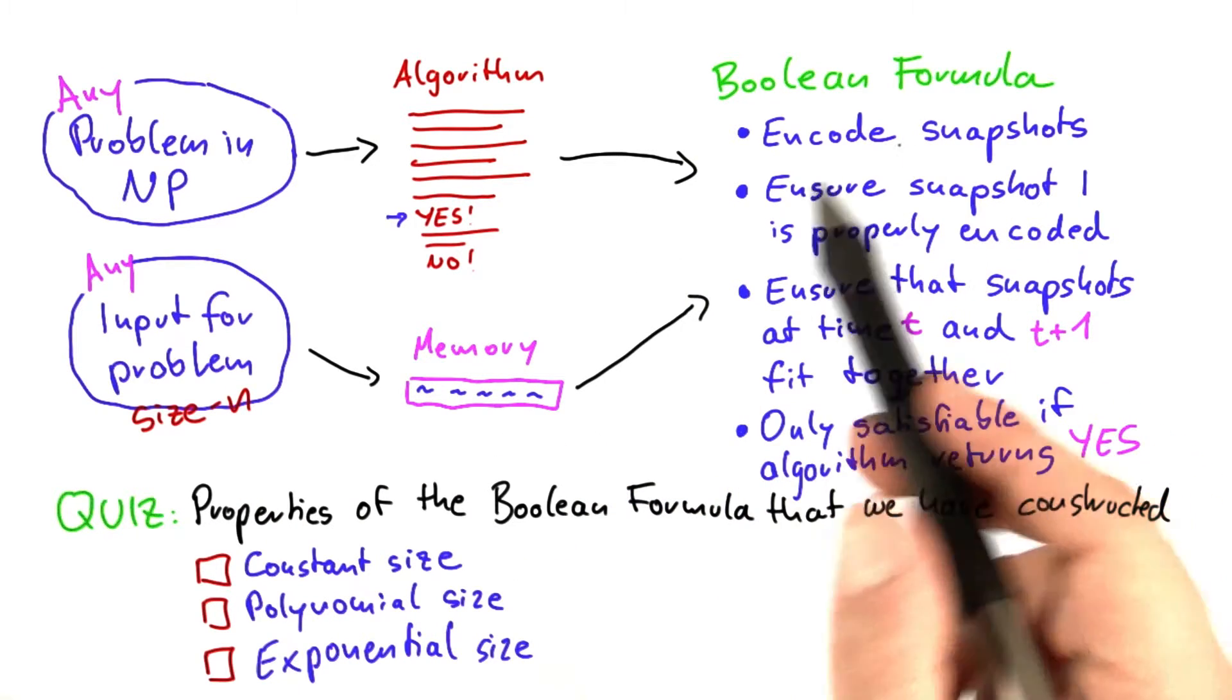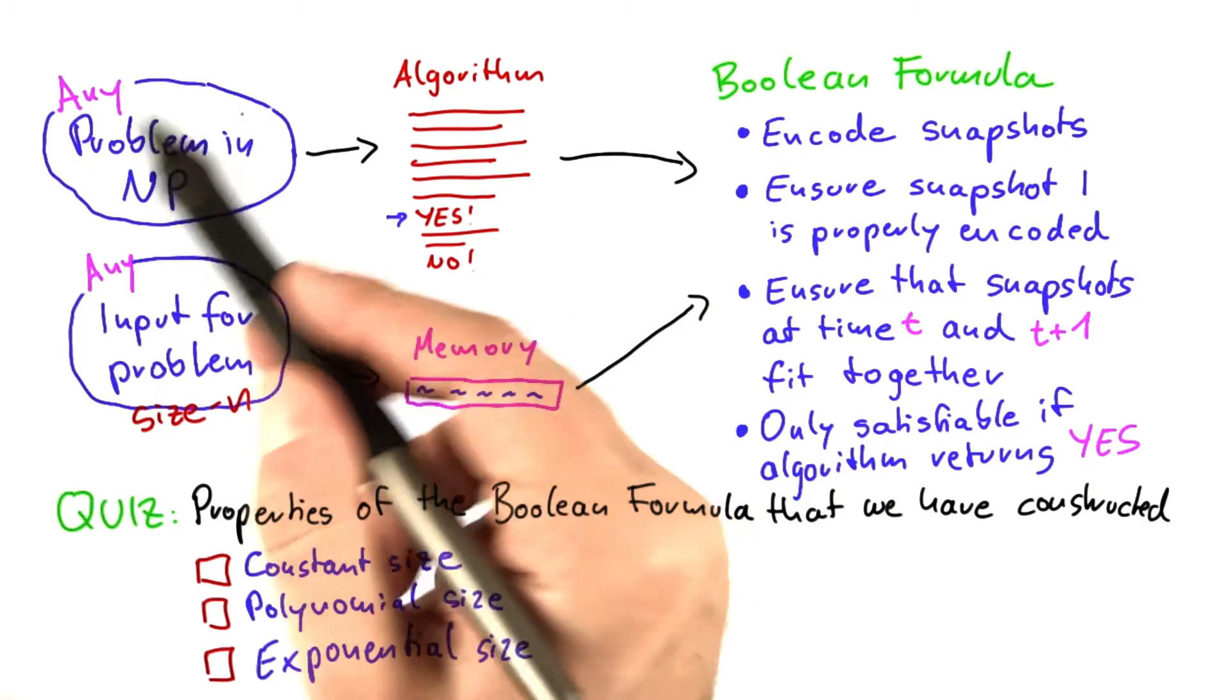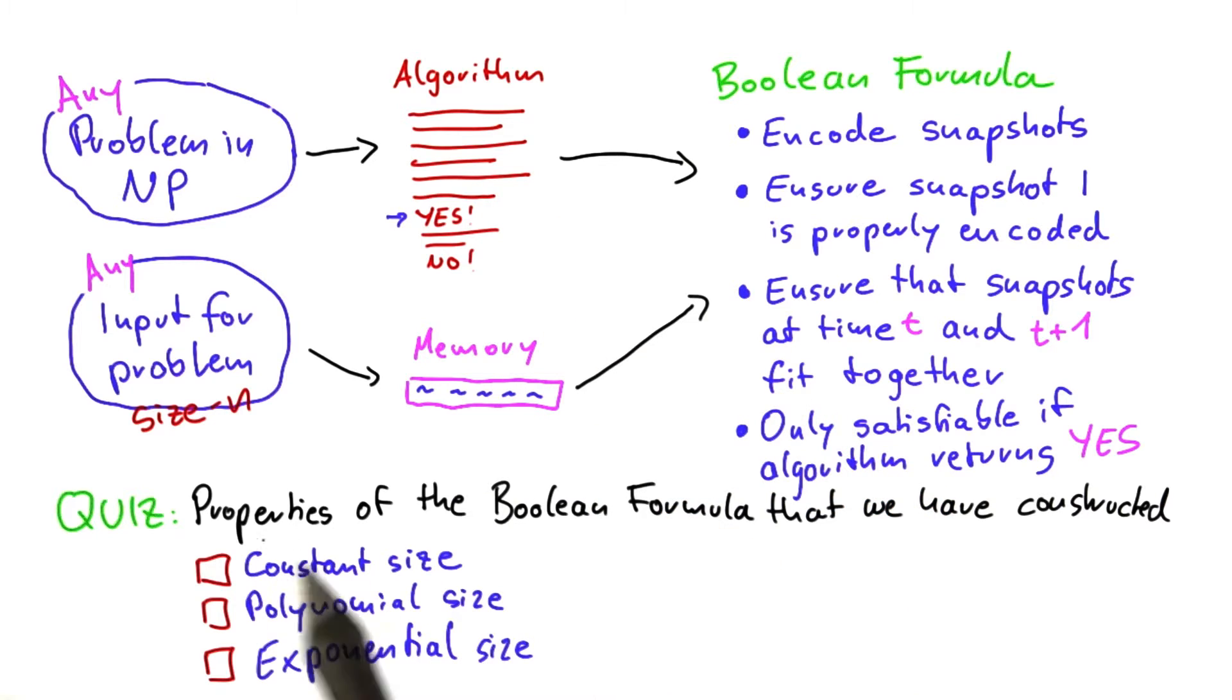And what I would like you to do is to recap the properties of this Boolean formula here. First of all, what's the size of this Boolean formula for an input of size n? And remember this algorithm here runs in polynomial time. So is this Boolean formula up here constant in size, polynomial in size, or exponential in size with respect to n?